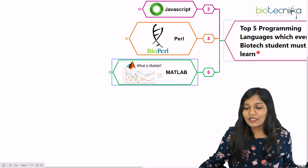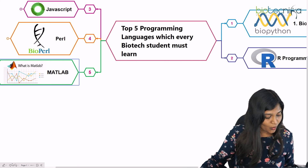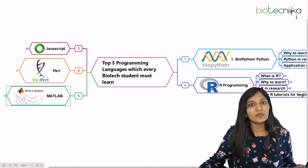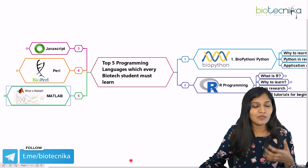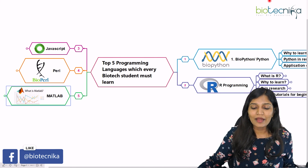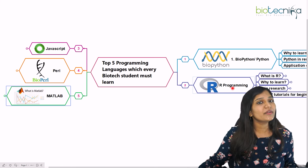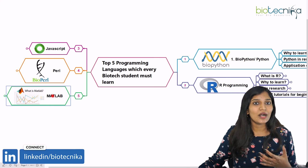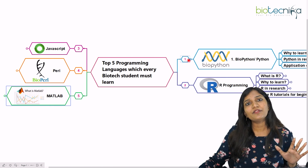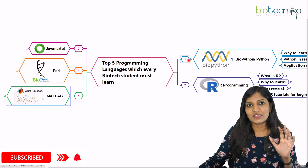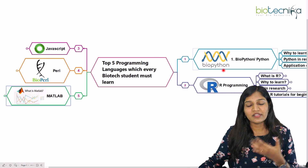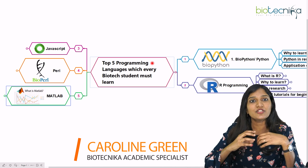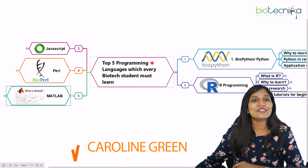So we've talked about the top five programming languages every biotech fresher should learn. I suggest starting with Python — open source and widely available. R programming is definitely a must. Then move on to Perl, JavaScript, and MATLAB. There are also many others like C, C++, and C#, but these five are most important for a biotech fresher. Start with Python and R programming, then proceed to the rest. I hope this video is helpful — share your suggestions in the comments!